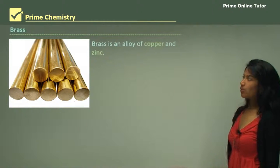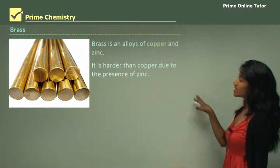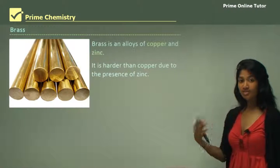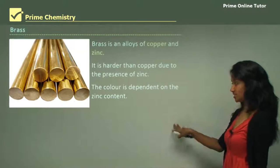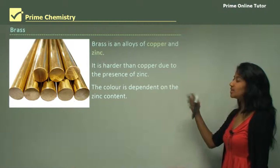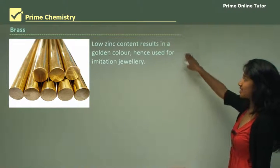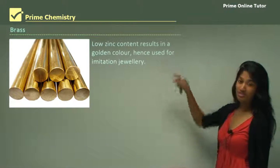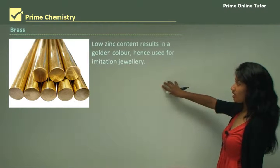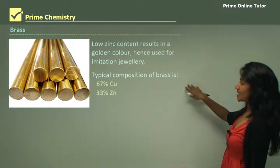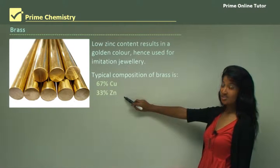Now we'll be looking at brass, which is an alloy of copper and zinc. It is much harder than copper due to the presence of zinc, and the colour is dependent on the zinc content. As zinc content goes up it'll be more silvery in colour. Low zinc content results in a golden colour, hence used for imitation jewellery. The typical composition of brass is 67% copper and 33% zinc.